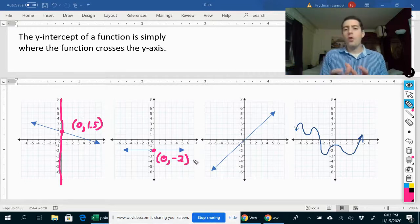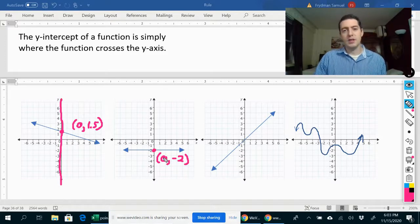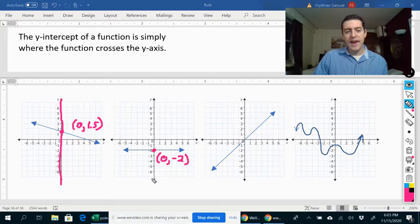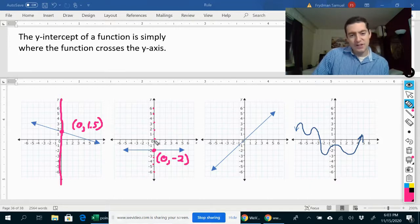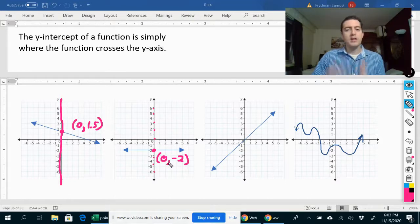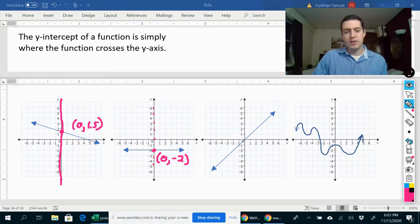So for all of the y-intercepts, the first number that you put here is always going to be zero, because along the y-axis, x is always zero. For every point, even though these are not actually the y-intercepts here, any point along the y-axis has an x value of zero. So the y-intercept always starts with zero.